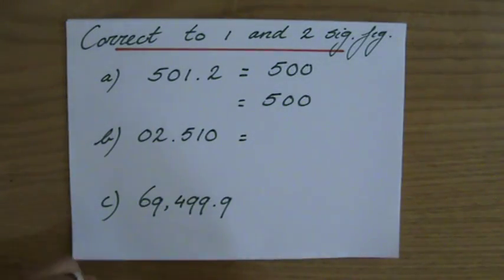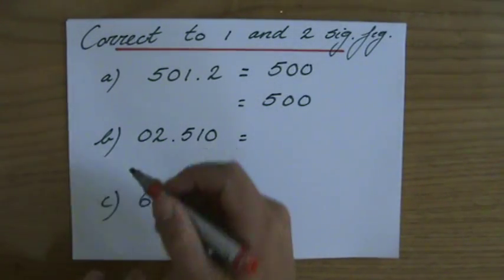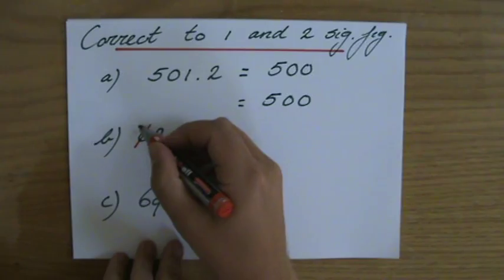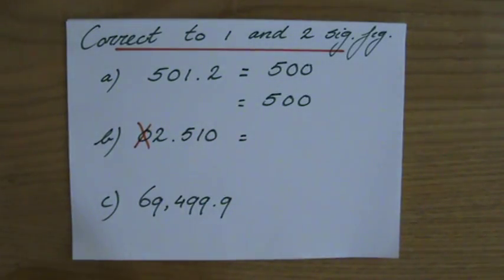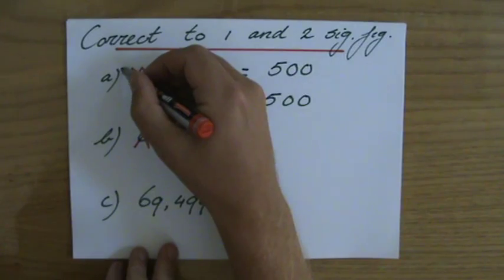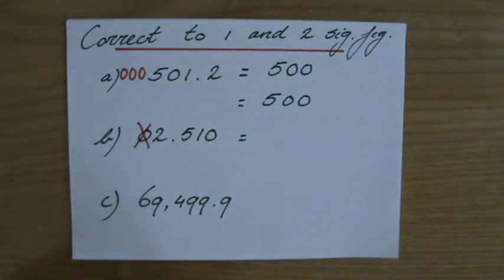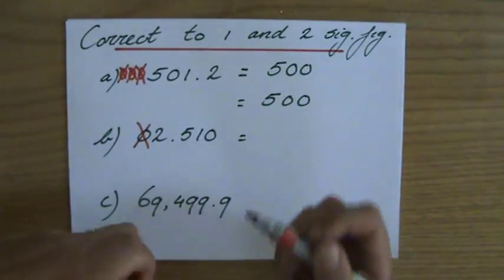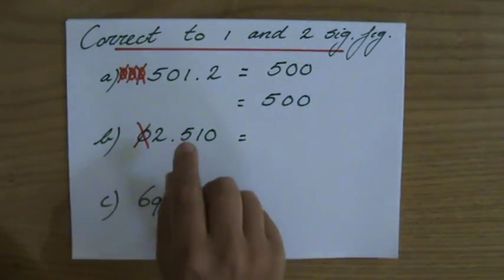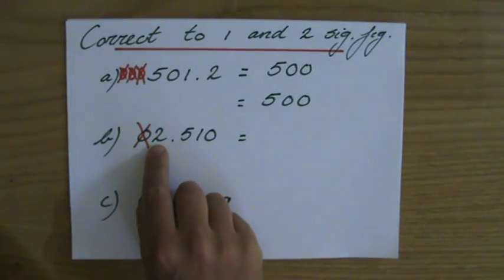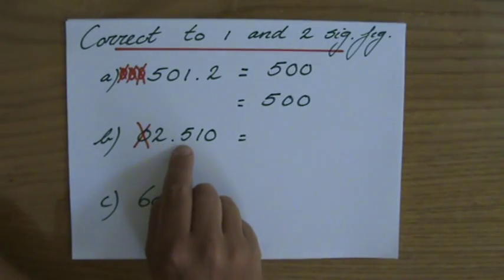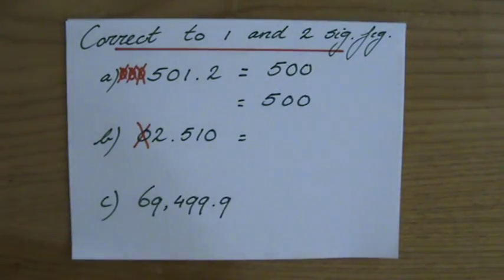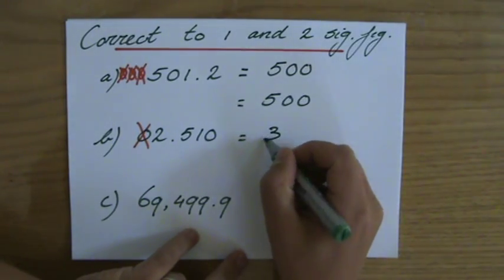The next number: one significant figure. Some of you might say the first number there is the first significant figure, but those leading zeros don't mean anything — we do not count zeros at the beginning as significant, because they have no value. They can be placed anywhere; just writing them there doesn't make them important. My first significant figure here is the two — it gives the most value to my number — and it stays a two or goes up to a three. Indeed, it goes up to a three.